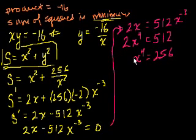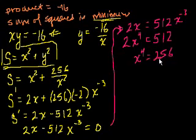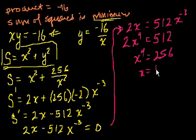So x is the fourth root of 256. The square root of 256 is 16, and the square root of 16 is plus or minus 4. So x equals plus or minus 4. You can verify this by taking either minus 4 or positive 4 to the fourth power — you get 256.